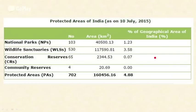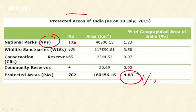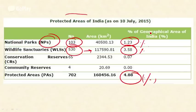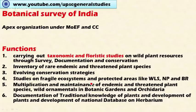At present, 4.88 percent of India's geographical area is covered by protected areas. There are 103 national parks accounting for 1.23 percent of India's area, and 530 wildlife sanctuaries spreading across all states covering 3.58 percent of India's area. Conservation reserves account for 0.07 percent, and there are only four community reserves among the 742 protected areas in India in total.